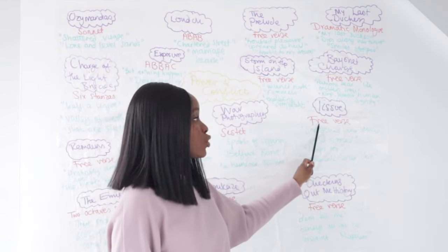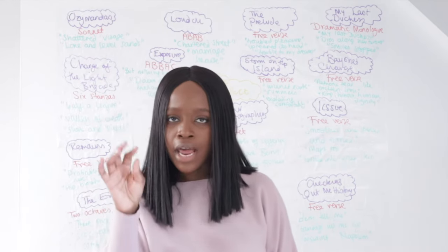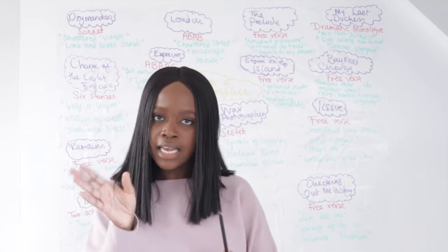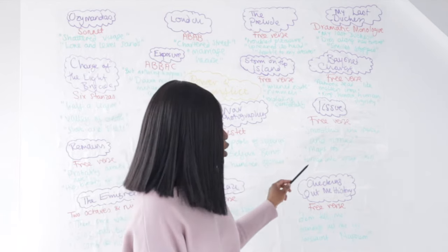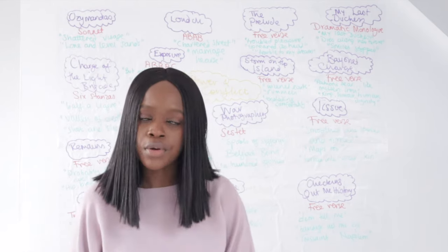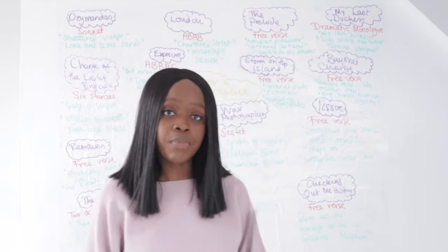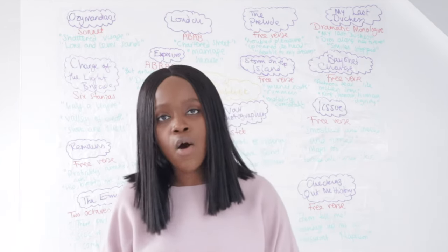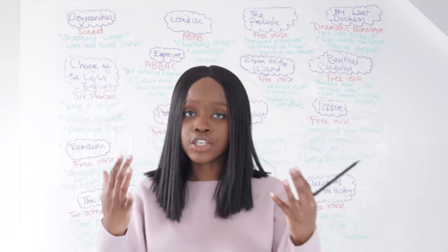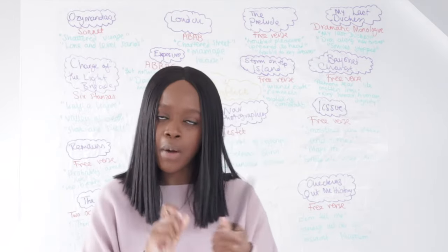The next poem is Tissue, written in free verse. The first quotation, 'smoothed and stroked and turned,' describes the Quran — a religious text so well-used it has become very thin with time. The next quotation, 'maps too,' with its caesura, shows that even flimsy paper has the power to shape borders, countries, and identities. The final quotation, 'turned into your skin,' reflects how paper shapes all of us — through money, religious texts, maps — and paradoxically, though paper is weak, it remains enormously powerful.